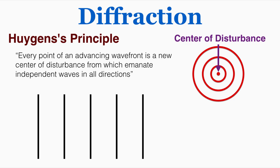Huygens principle says that every point of an advancing wavefront is a new center of disturbance from which emanate independent waves in all directions. So if we choose any one point on this advancing wave, it behaves like a center of disturbance. I chose that point in the middle and we can have a new wave radiating out in all directions.